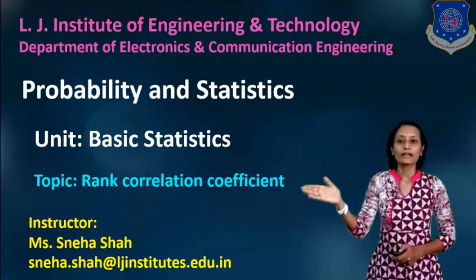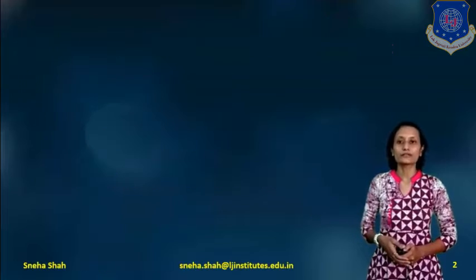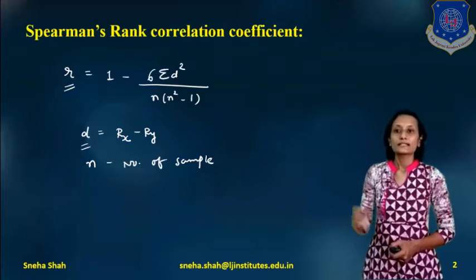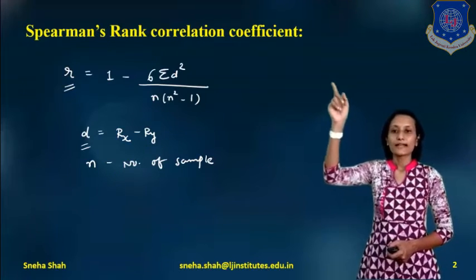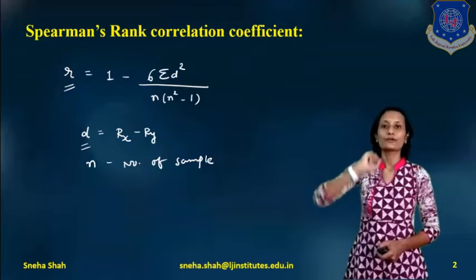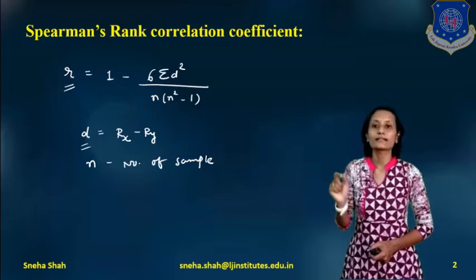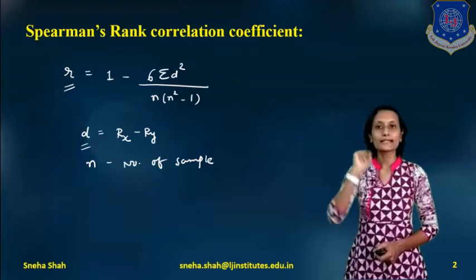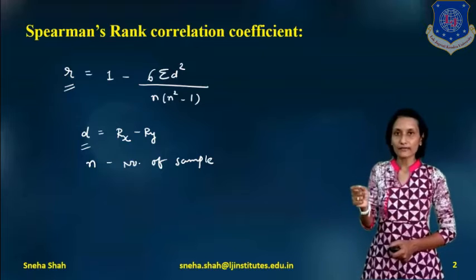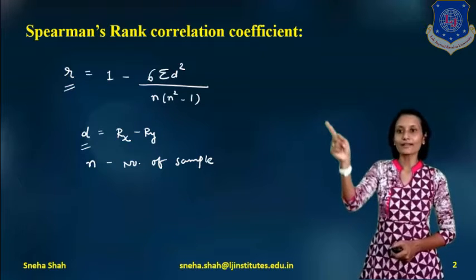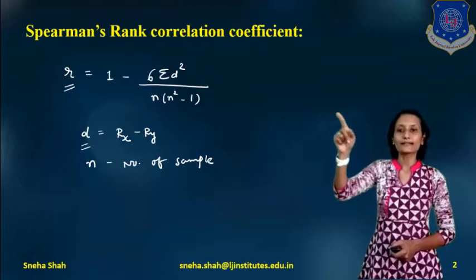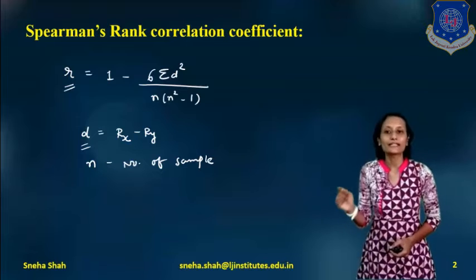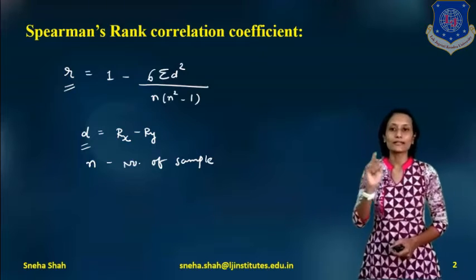If we want to define the rank correlation coefficient, we will use Spearman's rank correlation coefficient. If we are defining its coefficient then it will be represented in the form of R. The value of R equals to 1 minus 6 times summation of d-squared, divided by n into n-squared minus 1.